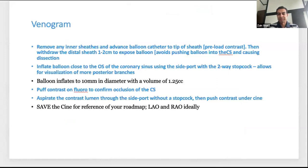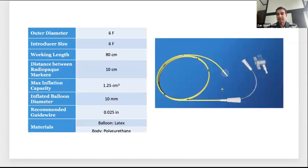This venogram serves as your road map. Get a good quality LAO and RAO venogram — you don't want to do multiple ones or subject the patient to large contrast loads. The balloon has a port to inflate air and a port to inject contrast. You can pass the balloon in until there are at least four lines visible, minimizing how often you have to use fluoro. Then floor briefly to confirm you're not passing the balloon blindly into the CS, which could cause a dissection.